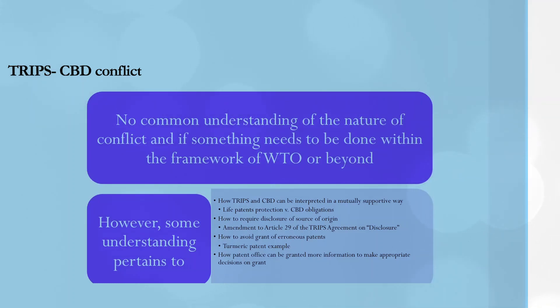It is also important for some countries to look into how patent offices can gather more information to prevent erroneous grant of patents and to see that traditional knowledge, or traditional knowledge associated with biodiversity, is not misappropriated. Countries have tried to implement measures like databases on traditional knowledge, as China and India have done.